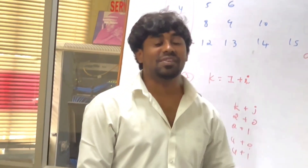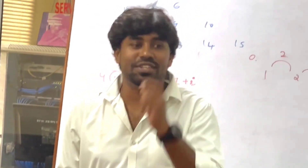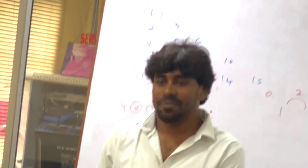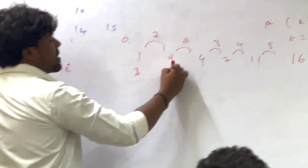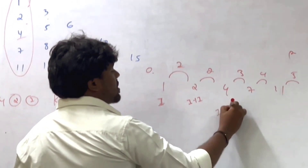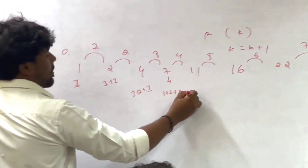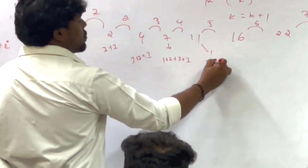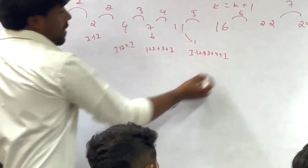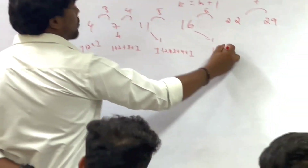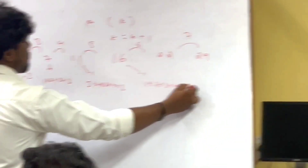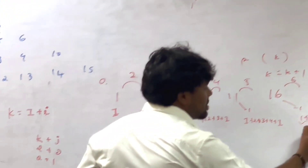Got it? This is also designing n number of times. Now you want to write the equation. You will generate one equation. For example, this is nothing but 1 only. This is 1 plus 1. This is 1 plus 2 plus 1. This is 1 plus 2 plus 3 plus 1. This is 1 plus 2 plus 3 plus 4 plus 1. It goes on like this — there is nothing but a summation of numbers.